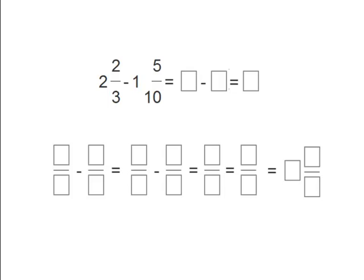For this problem we should first subtract the whole numbers. The whole numbers are 2 and 1. So let's do that now. 2 minus 1 equals 1. Let's cross them out because we are finished with those numbers.